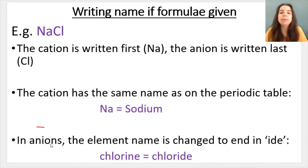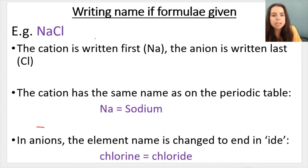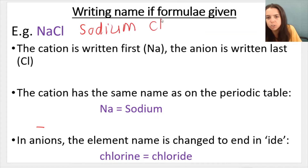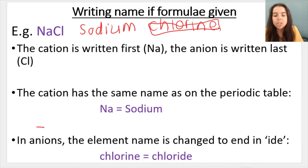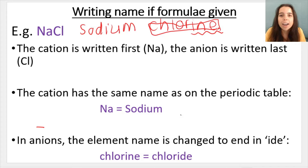So the non-metals typically gain electrons, and the name changes — the way it is on the periodic table is not how we write it. So what I mean is we don't write sodium chlorine. What we do is we take the anion and we change the end of the name — so the '-ine' becomes '-ide'. So it's sodium chloride.